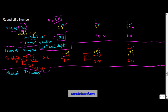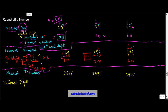For rounding to the nearest thousand, the concept is the same — the only difference is that instead of the tens or units digit, you look at the hundreds digit. Let me take examples: 2535, 2355, and 2965. The hundreds digit is 5, 3, and 9 respectively.